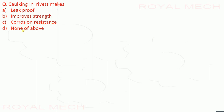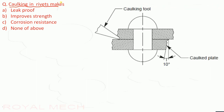Caulking in rivets makes them: leak proof; improves strength; provides corrosion resistance; or none of the above. Looking at what caulking means in rivets — we have a caulking tool and by using it we are producing the caulking. By this caulking, the rivet will be leak proof. So option A is the correct option.